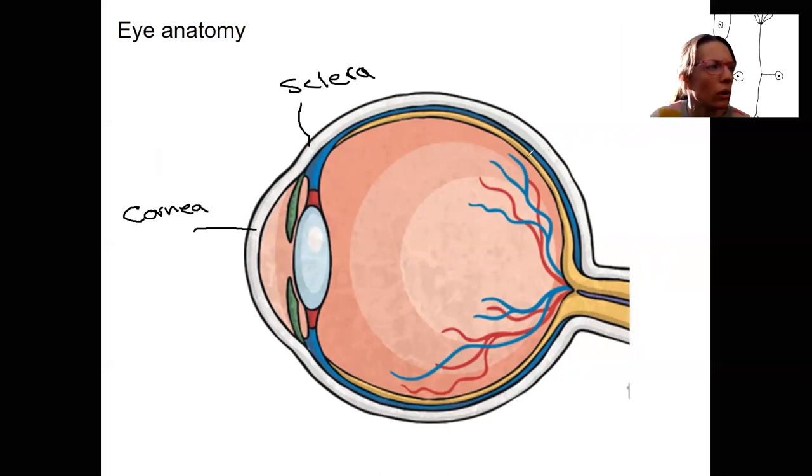The choroid is the next layer in. So that's right here. This is going to provide nutrients to the eye. And then underneath that, we've got our most important layer, our retina.